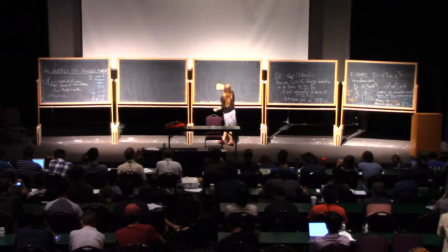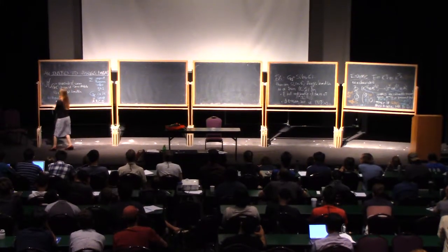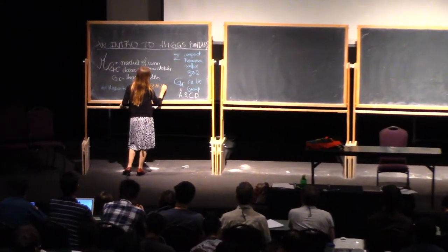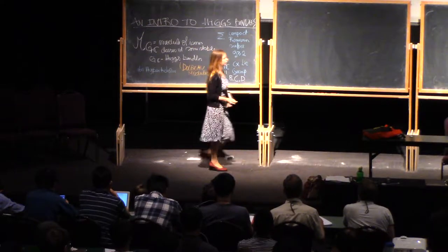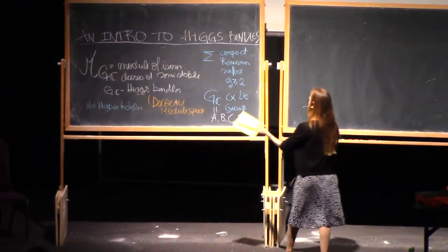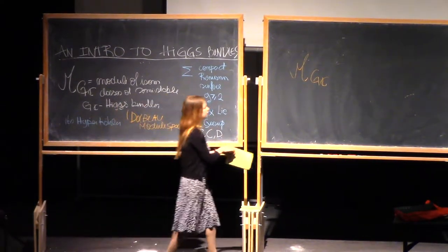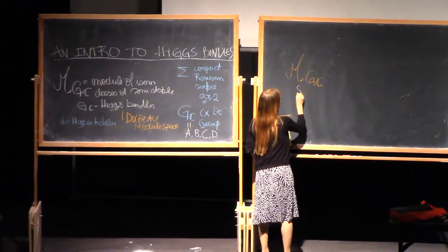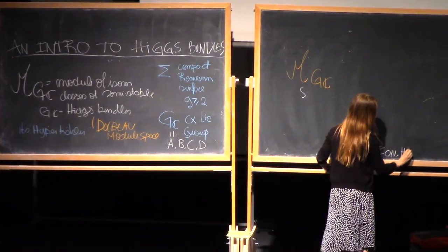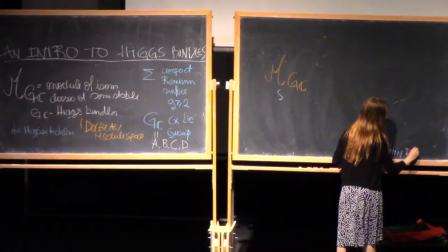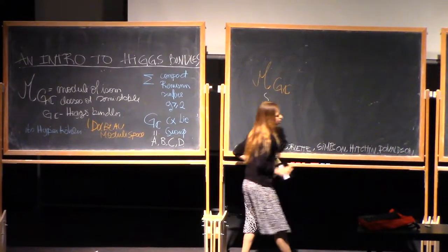The moduli space of Higgs bundles is what some people call the Dolbeault moduli space. One of the interesting things appearing from Higgs bundles — using the more general version we just defined, the moduli space of principal G^C Higgs bundles — are correspondences between this space and other spaces of objects. The first correspondences I want to mention come from work of Simpson, Hitchin, Donaldson, and Corlette, back in the late 1980s and beginning of the 1990s.